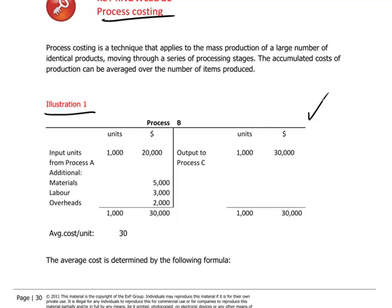Let us visualize that a product is being made and moving from a previous process, Process A, into the current process we're concerned with, called Process B. The units being introduced from Process A are 1,000 in number, and they have accumulated production costs of $20,000. This is our starting point.